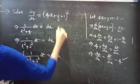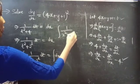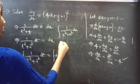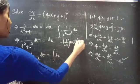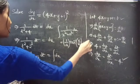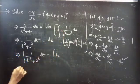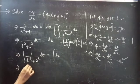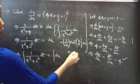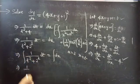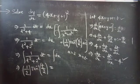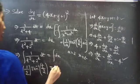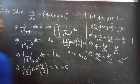We know that the integral of 1 by x squared plus a squared with respect to dx equals 1 by a times tan inverse of x by a plus c. Then, with a equals 2, this becomes 1 by 2 times tan inverse of t by 2 equals x plus constant c.